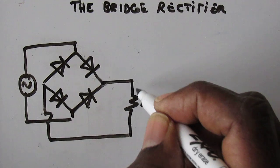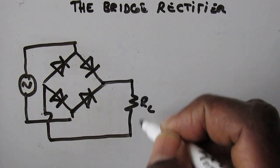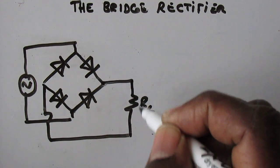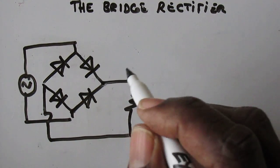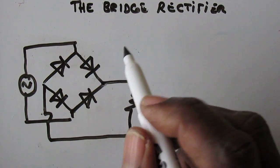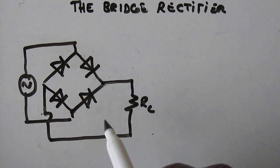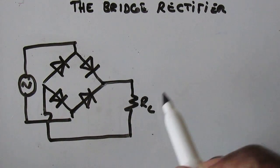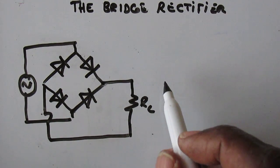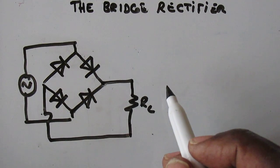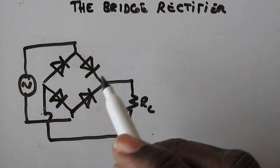The polarity of the voltage across the load will always be positive. That's what you want — you want to rectify the AC signal so that you get a pulsating DC signal. Now let's see how it operates.